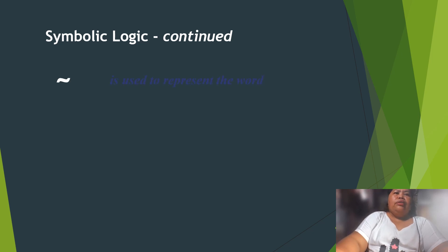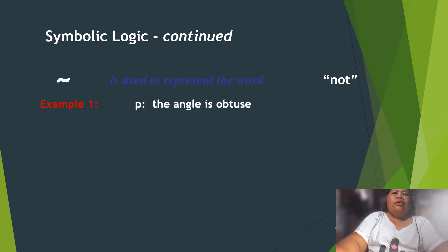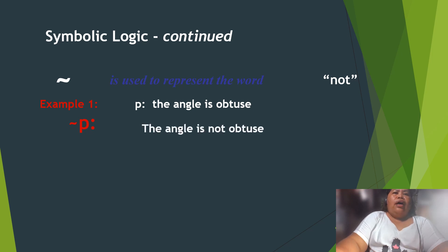The negation symbol '~' is used to represent the word 'not.' Example one: P is 'the angle is obtuse,' so not-P is 'the angle is not obtuse.'